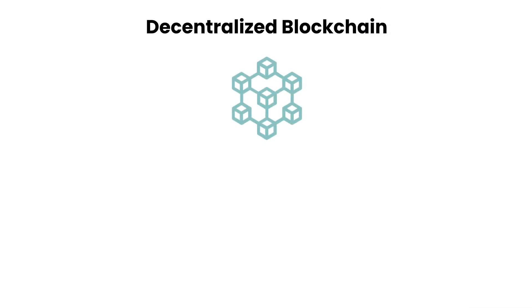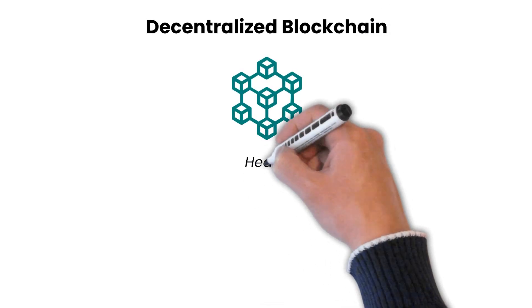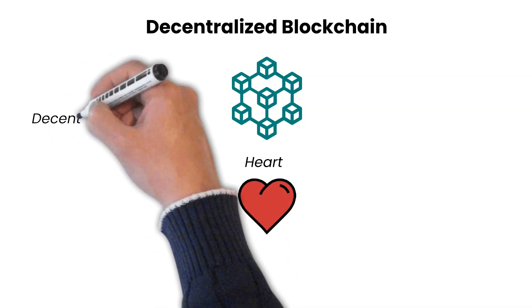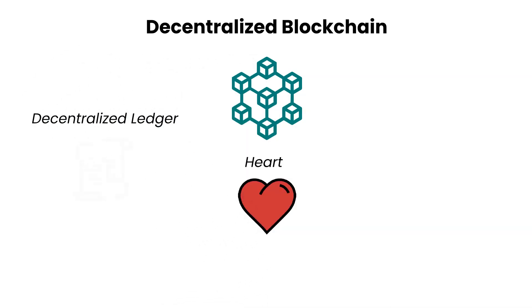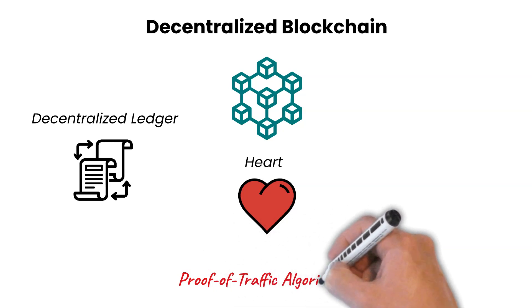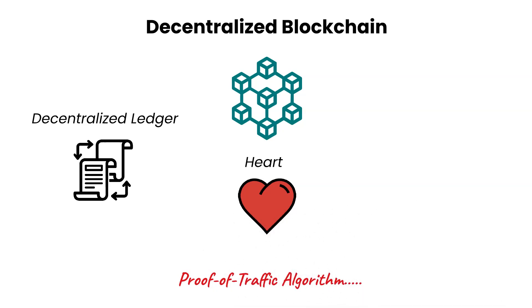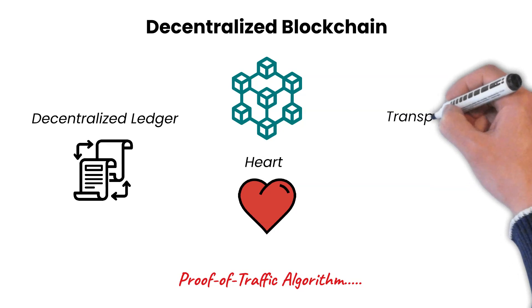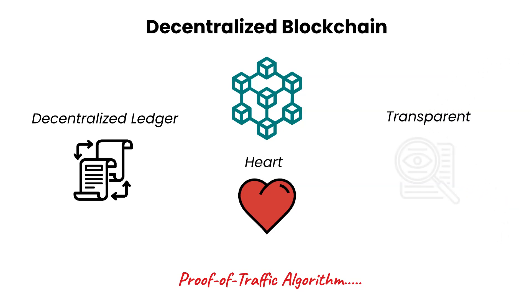Decentralized blockchain: the Stratos decentralized blockchain is at the heart of the network, facilitating all of the decentralized ledger transactions. The blockchain enables the proof of traffic algorithm, which ensures the payment systems are always up to date with accurate and fully transparent information.